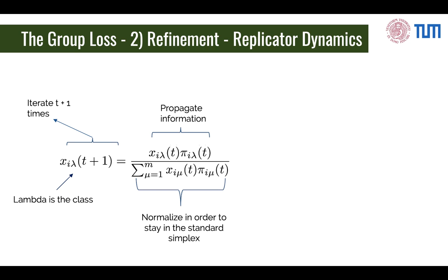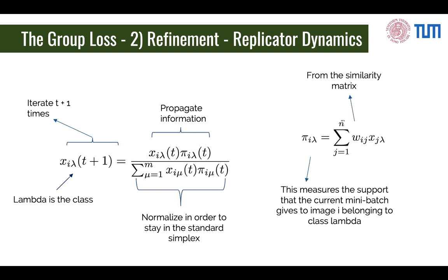Let's see the math behind this. We are going to use an optimization technique called replicator dynamics, which comes from evolutionary game theory. In the numerator, we have this propagation of information, while in the denominator, we normalize the values in order to stay in probability space, so that the probabilities of each prediction sum up to 1. This is an iterative process that goes from time t to time t+1. The element π_i indicates the similarity between i and all the other elements in the mini-batch — specifically, the priors of all elements j having some particular class λ.